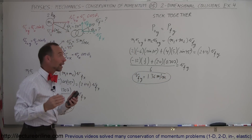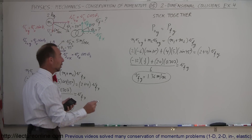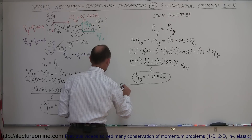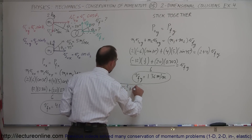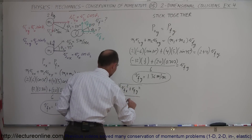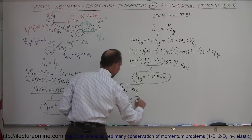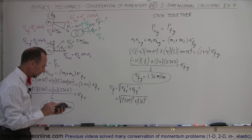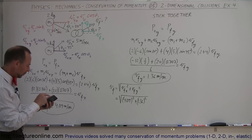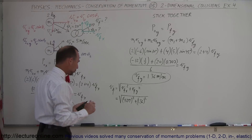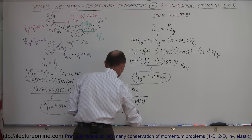Now we have the x and y components of the final velocity. Using the Pythagorean theorem, v final equals the square root of v final in the x direction squared plus v final in the y direction squared, which is the square root of 4.09 squared plus 1.36 squared, giving us 4.31 meters per second.